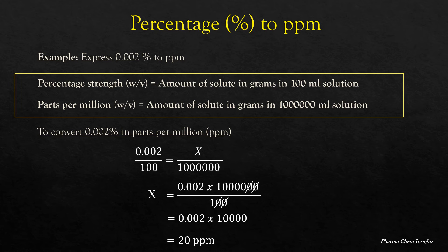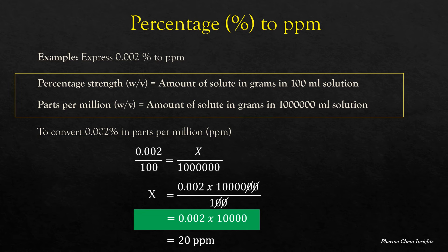You don't need to do all these calculations. Just multiply the percentage — 0.002 — into 10,000, and you will get the desired answer, that is 20 PPM.